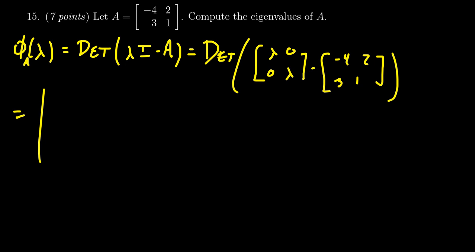We're going to get λ + 4, zero minus 2 which is -2, zero minus 3 which is -3, and then λ - 1. So this is what we have to compute right here. It's a 2 by 2 determinant, so we're just going to take the difference of the products of the diagonals.